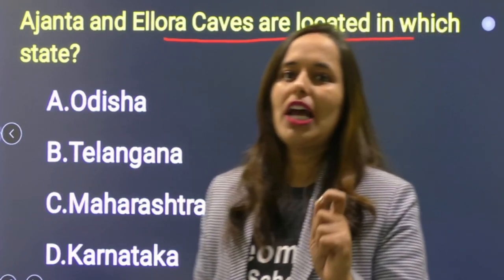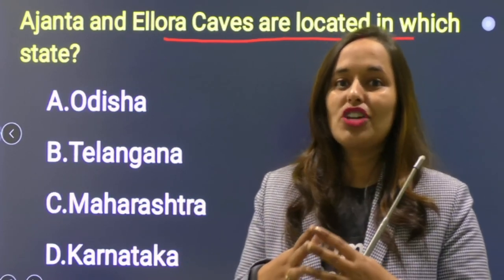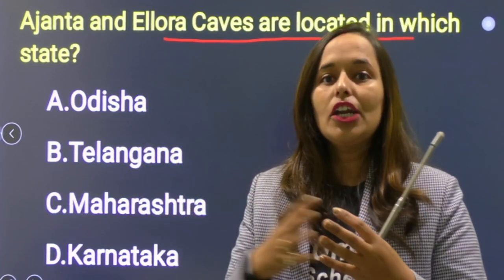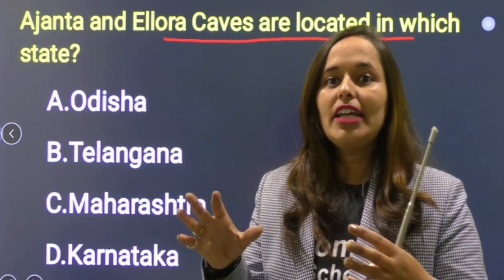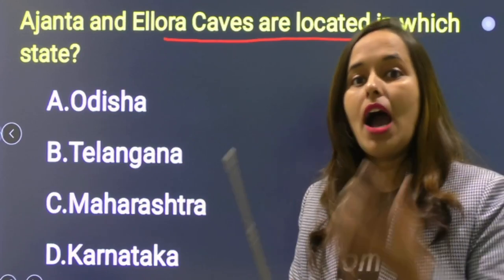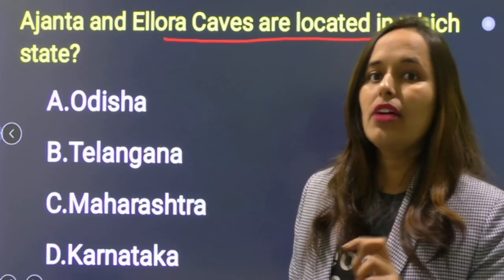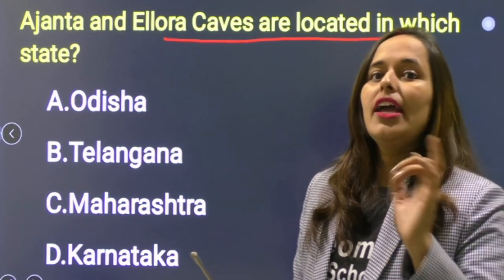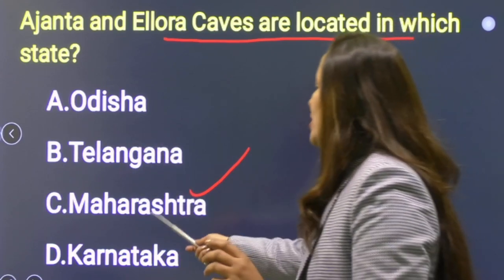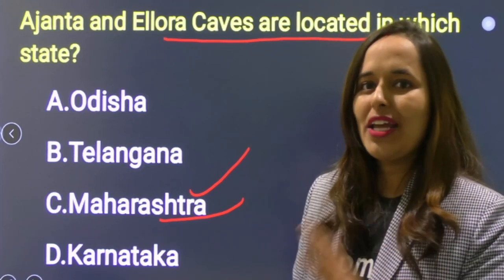Next: Ajanta and Ellora caves are located in which state? यह GK की book का most important question है। Ajanta और Ellora caves एक ही mountain को cut करके बनाए गए हैं — बहुत अच्छी architecture। Options: Odisha, Telangana, Maharashtra, Karnataka. Ajanta and Ellora caves — Maharashtra में, Aurangabad district में। Option C is correct.